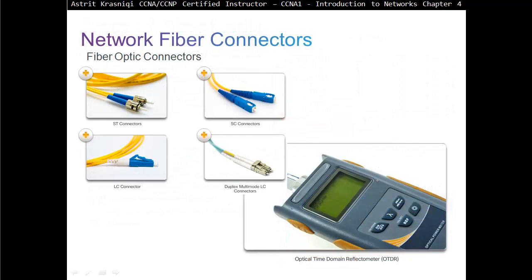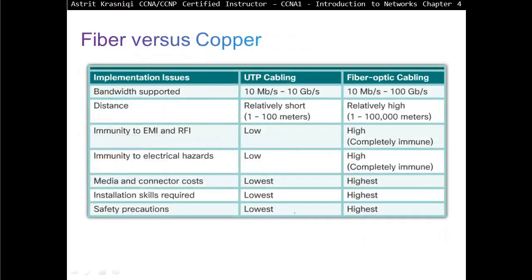Network fiber connectors: we have different types — the ST connector, SC connector, and the very popular LC connector. Fiber optic cabling is not something you can learn in a couple of hours — it would take months to really master. We also have an optical time domain reflectometer, which checks whether the cable is correct. If you have to join two cables together, the light has to pass through at nearly 100%, otherwise it won't travel. And since the fiber optic cables are very thin, it's going to be very problematic to work with.